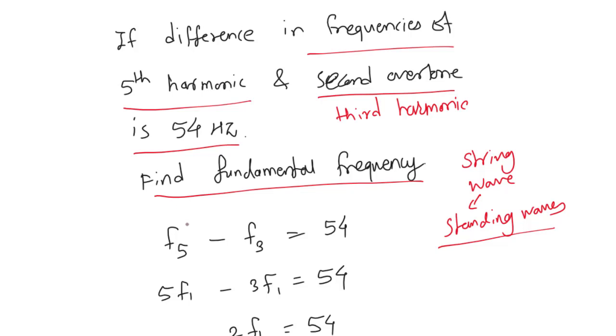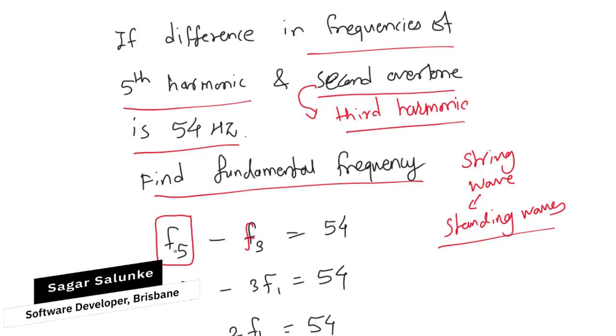The difference in the frequencies of the fifth harmonic, so fifth harmonic frequency is let's say f5, and second overtone. You must know that second overtone is basically third harmonic, so that's why f3, and that difference is given as 54 hertz.